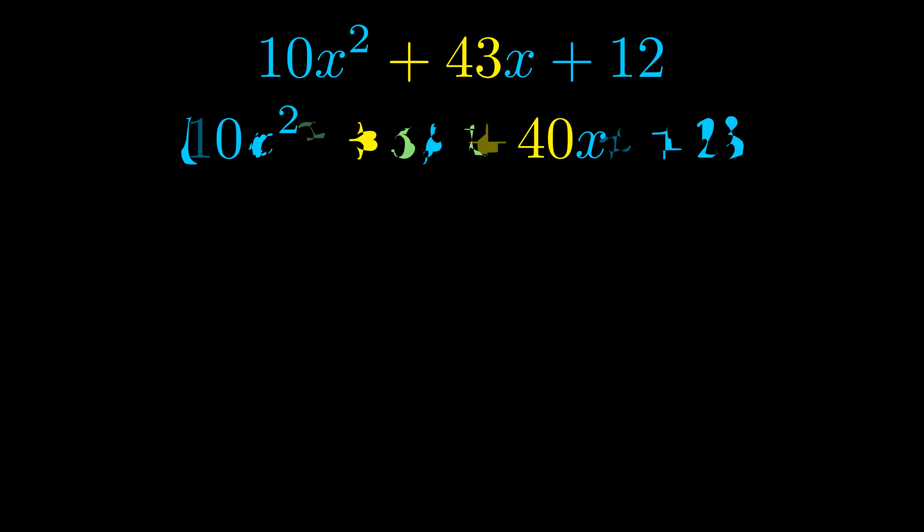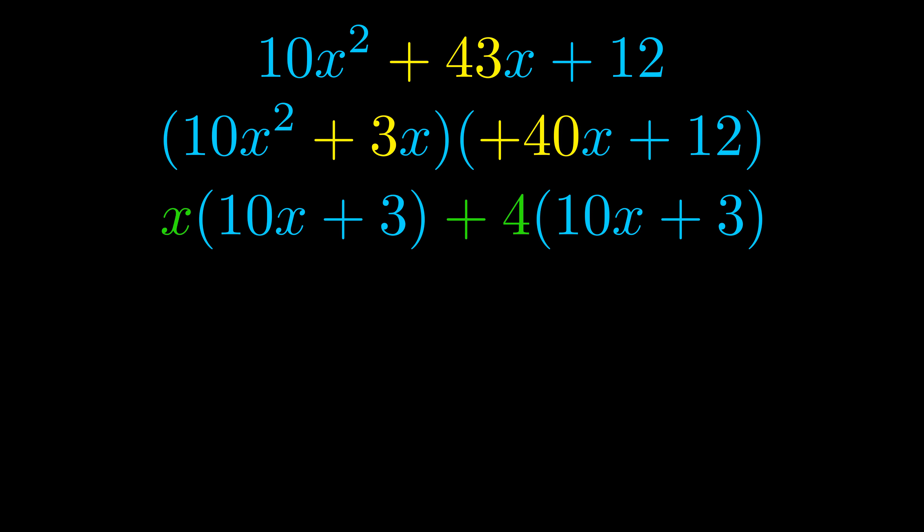Once we've done this we go ahead and we put parentheses around the first term and the last term and we do that so that we can take the greatest common factor out of both terms. We can see the greatest common factor is now outside in green.